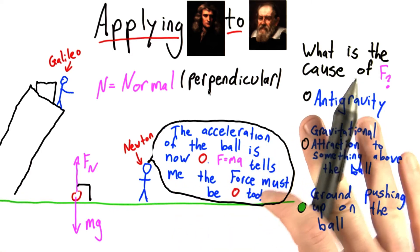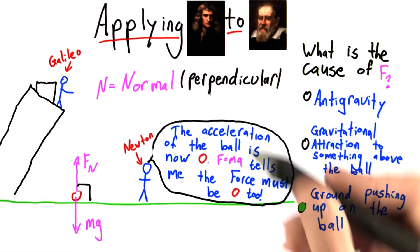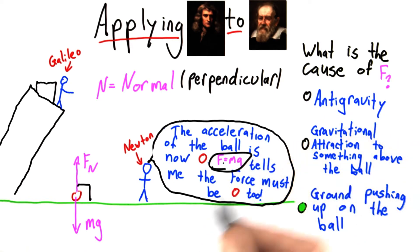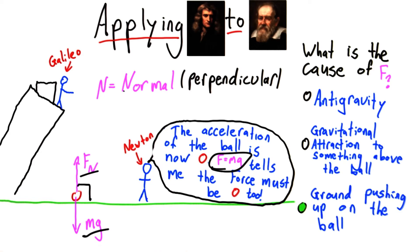Before we move on, I want to point out something truly beautiful here. We just discovered a force by having real trust in our model, F equals ma. If this is true and there really is a force downwards, there has to be a corresponding force upwards, and we call that the normal force.